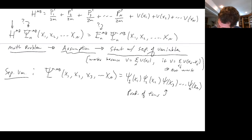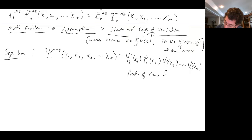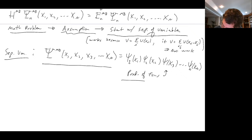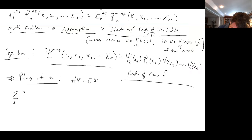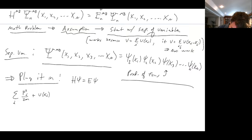Now we've made our assumption of separation of variables. The next step is to plug this product form into H psi = E psi. There's a lot of writing, but let's just do it. We plug it in. The Schrödinger equation becomes the sum over i of [p_i squared over 2m + V(x_i)] acting on the product of all the phi functions, equal to E times the same product.